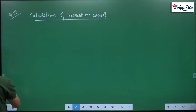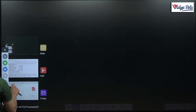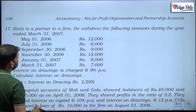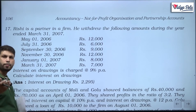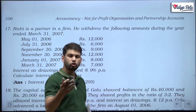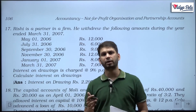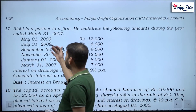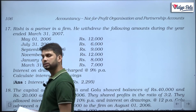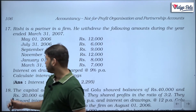The money withdrawn on 1st May — from May all the way through March — entire 11 months' interest will be charged on this.